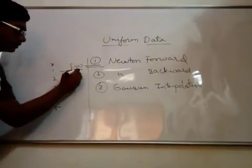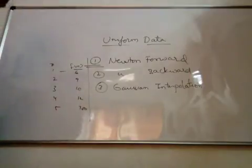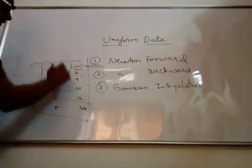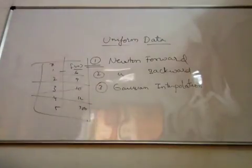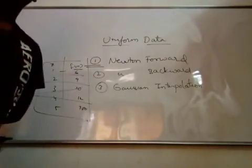f of x values can be 6, 9, 10, 12, 100. Right? So these are, the table is said to be uniform if the data is something like this.